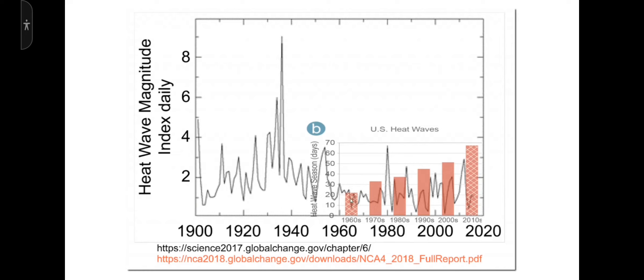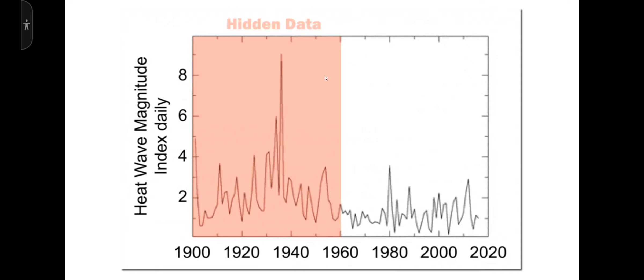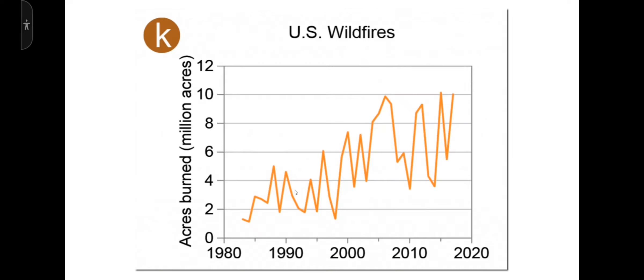I overlaid the part of the graph which went out to policymakers over here in the corner on top of the underlying data, and you can see exactly what they did. The red bars are what policymakers saw, and the extreme heat prior to 1960 is what they didn't see. People may consider this sort of behavior to be shocking, but it's actually standard operating procedure for climate alarmists. This graph shows in pink all the data that was hidden from journalists and policymakers.